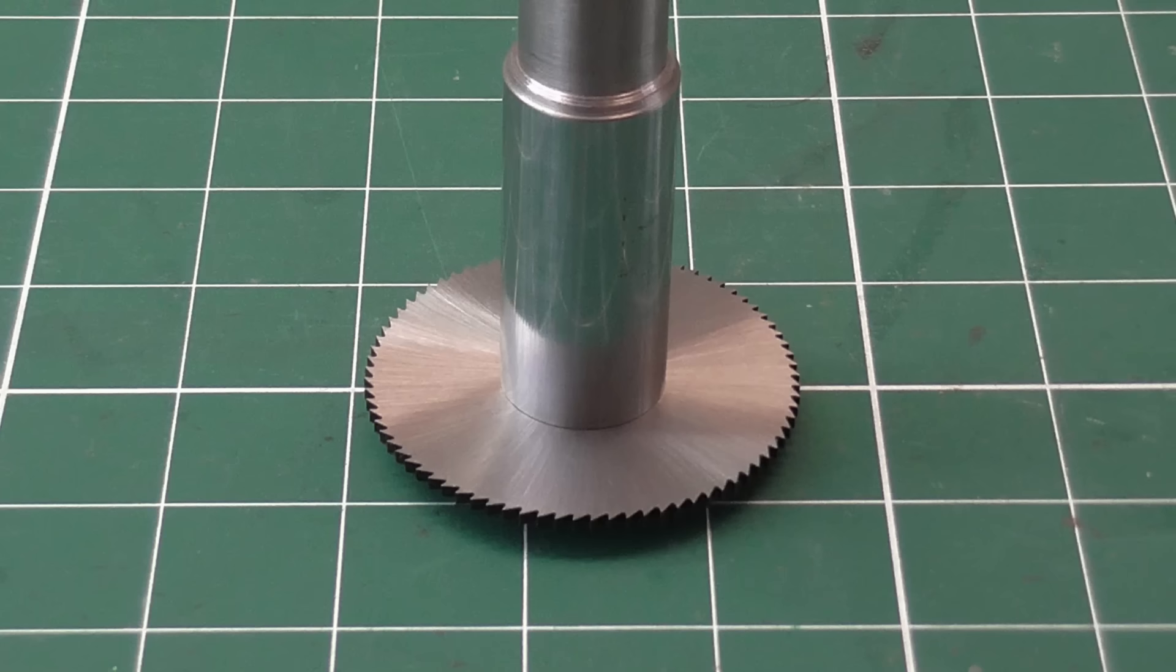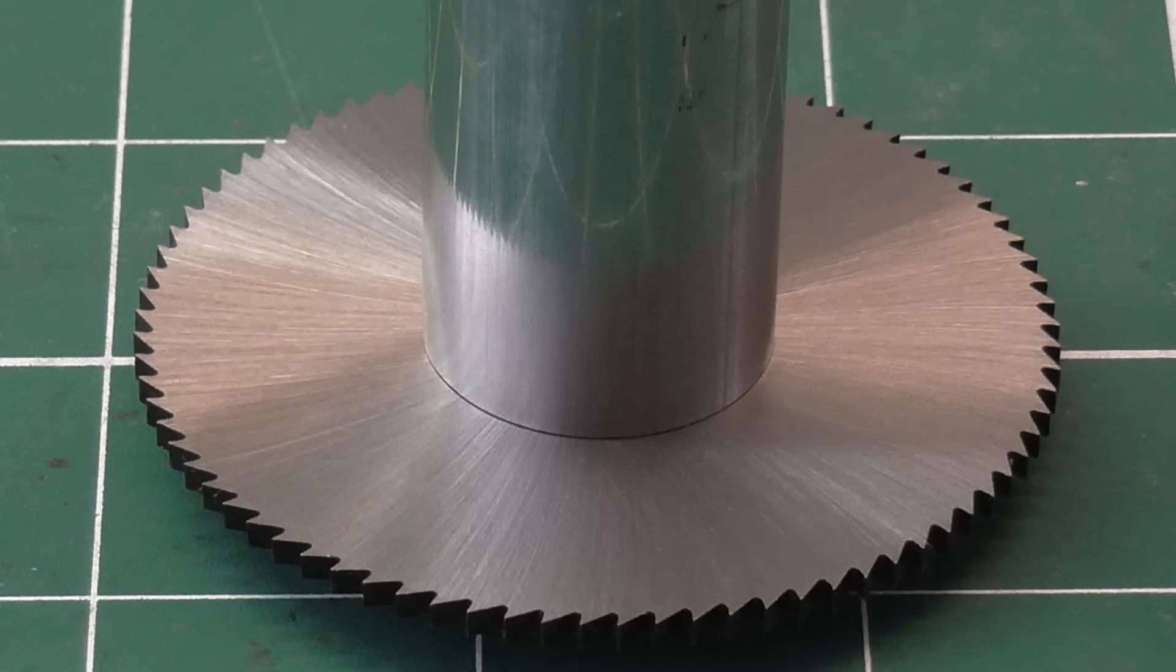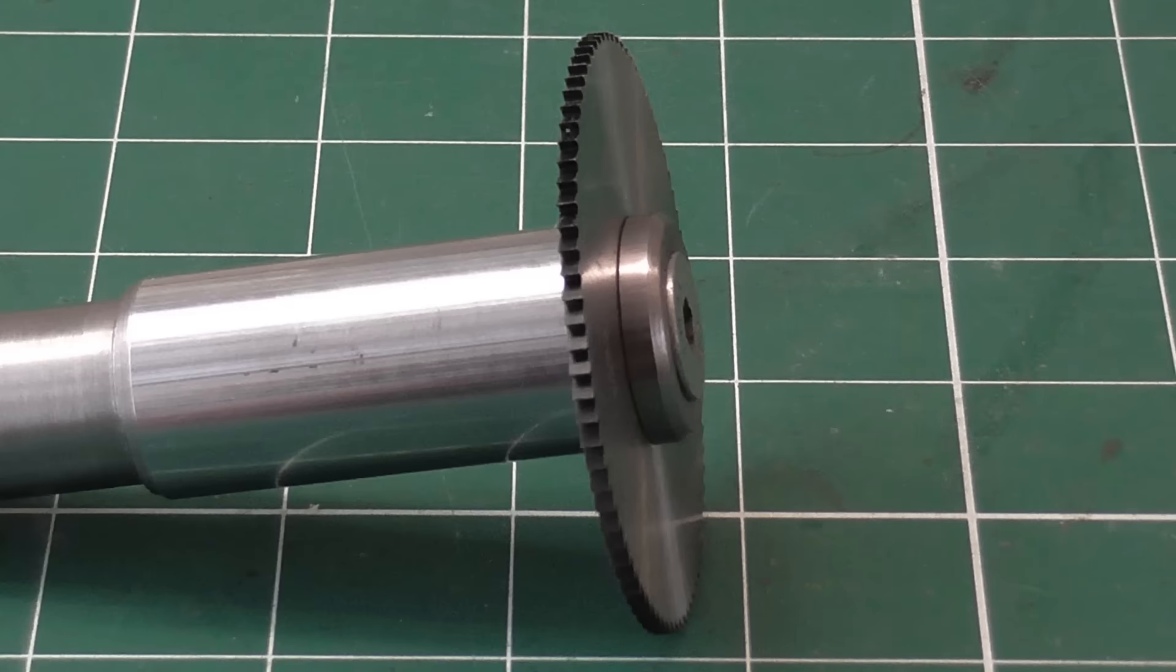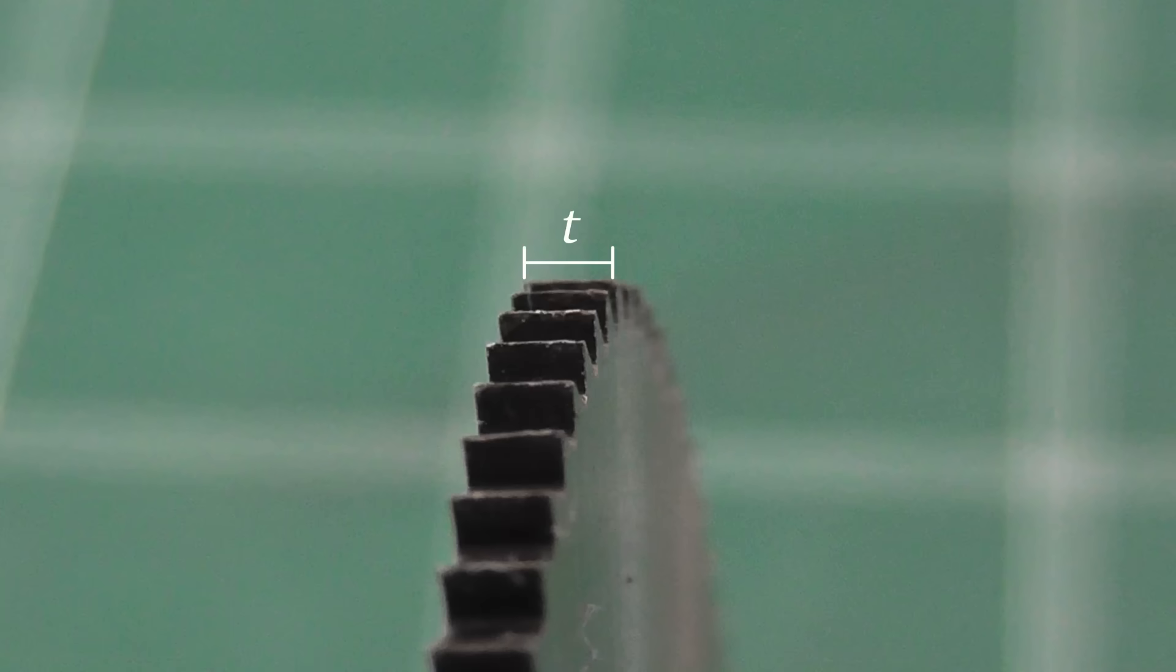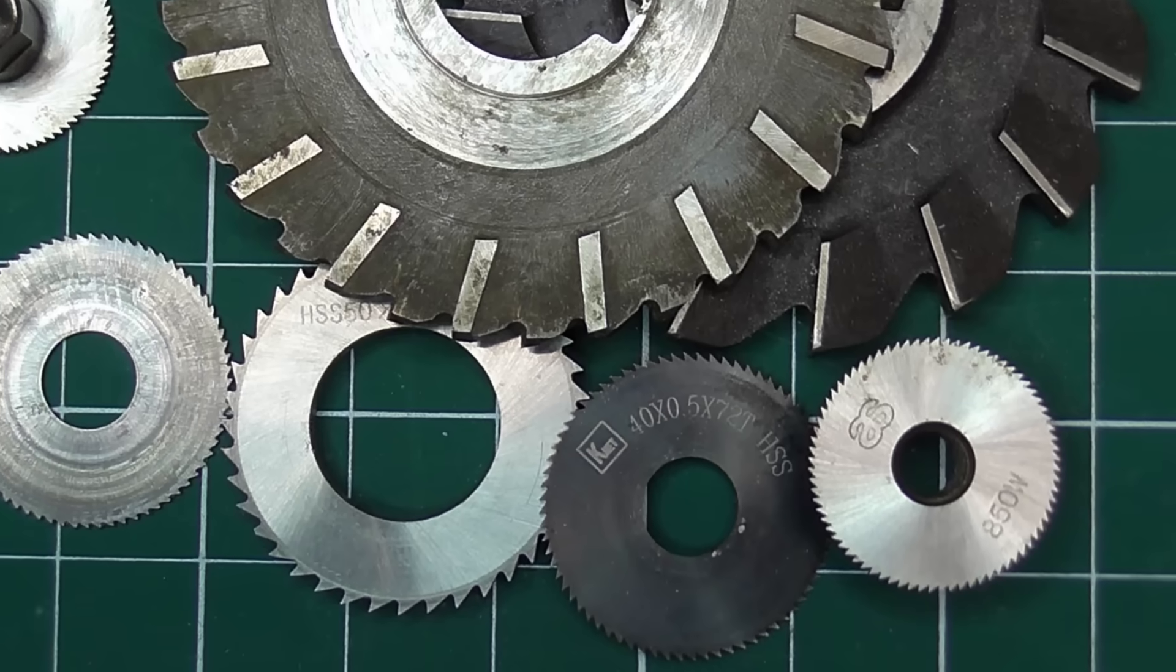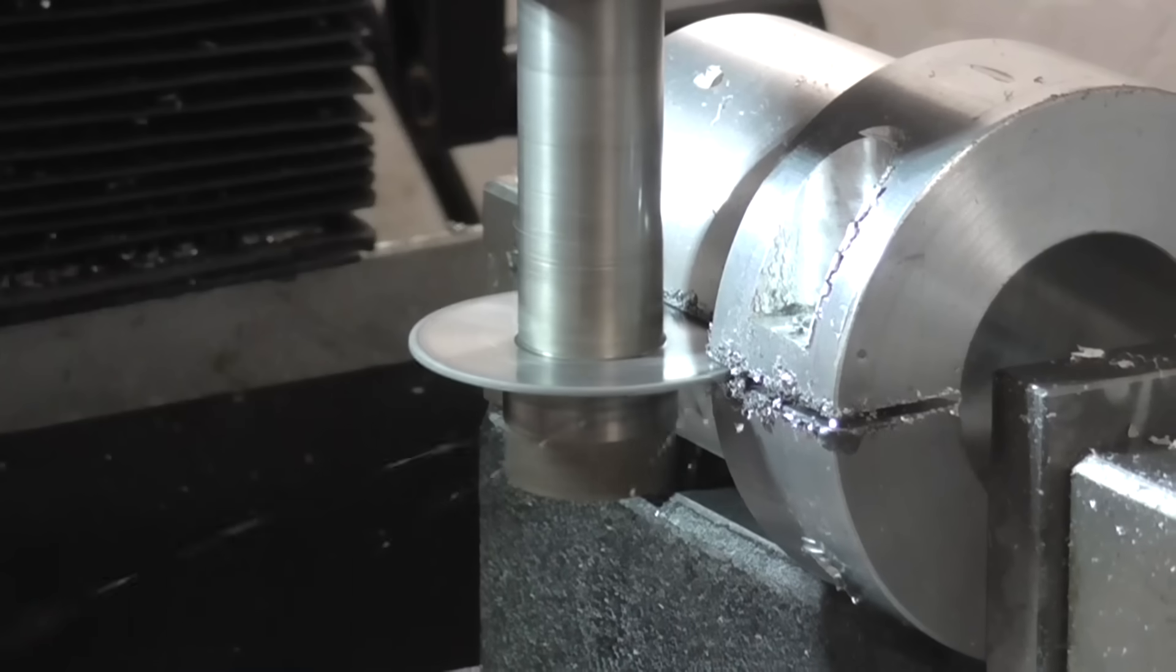A slitting saw is a circular saw blade, usually made from high speed steel, and very accurately ground to a certain thickness. They come in numerous sizes and are often used for cutting deep narrow slots which couldn't be done with an end mill.